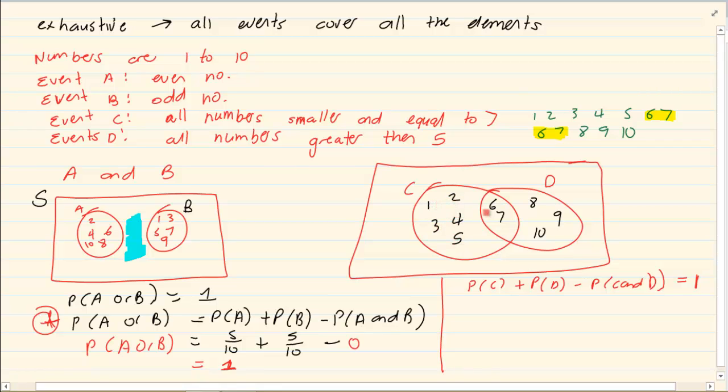1, 2, 3, 4, 5, 6, 7. We have 7 over 10 plus 1, 2, 3, 4, 5, 5 over 10 minus 1, 2, 2 over 10. Now does this equal to 1? Yes it does. So therefore this event C or D is also exhaustive.